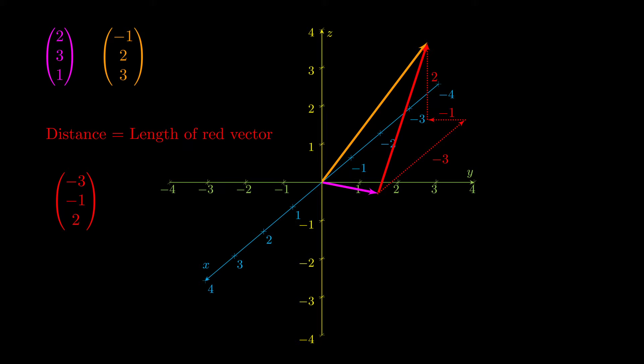And the distance between them then, between the pink and the orange, will be the length of that red vector. So we pull out our Pythagoras with those three numbers, and by complete coincidence, I promise, it is root 14 again.